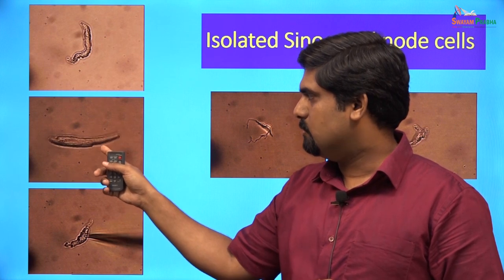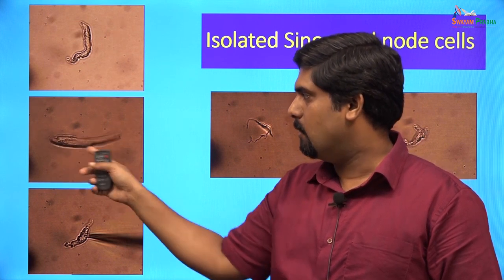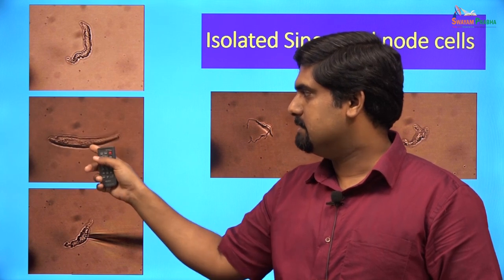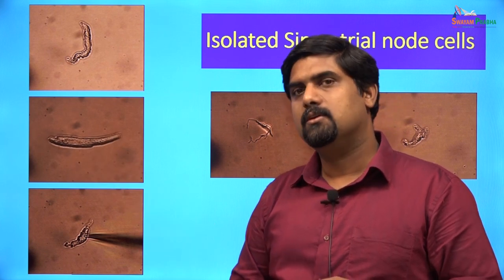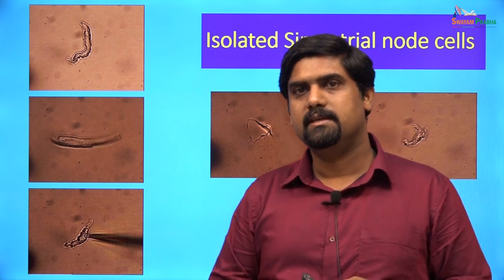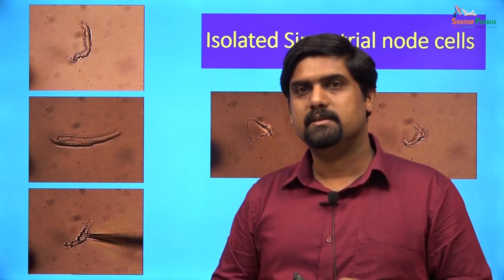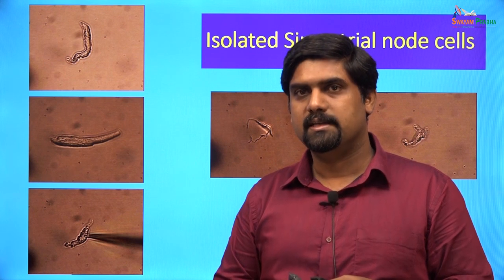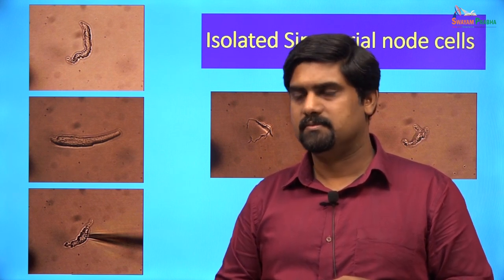This is a picture of an isolated mouse SA nodal cell. It is spindle-shaped and shows spontaneous contractions. Other mouse SA nodal cells can be spider-shaped or elongated. SA nodal cells are usually smaller in length and diameter, have poor sarcoplasmic reticulum, and also have poor striations. In contrast, a mouse atrial cell is longer, larger in diameter, and also striated.